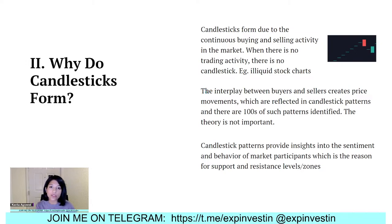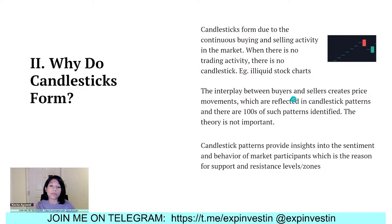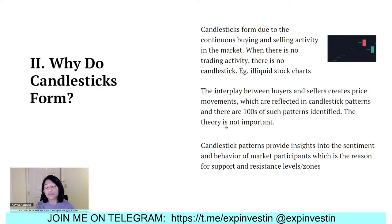The interplay between buyers and sellers creates price movements reflected in candlestick patterns, and there are hundreds of such patterns. But the theoretical part is not that important. On days when buyers are more in power we get a green candle; when sellers overpower the market we get a red candle; when there is a lot of fight between buyers and sellers we get a doji. There are nearly hundreds of patterns — harami, engulfing, piercing, three white crows, three black soldiers — so many that even I cannot keep track of all of them.